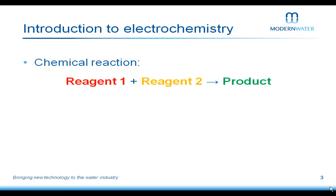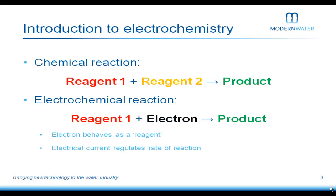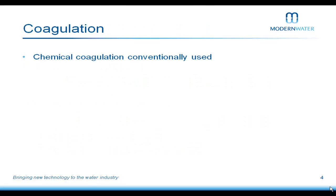Very simply then, electrochemistry: in a normal chemical reaction you have reagent 1 plus reagent 2 which gives you a product. In electrochemistry, however, you have reagent 1 and you utilise an electron as a secondary reagent, and that's how you form a product. In essence, you can control the rate of this reaction through electrical current.